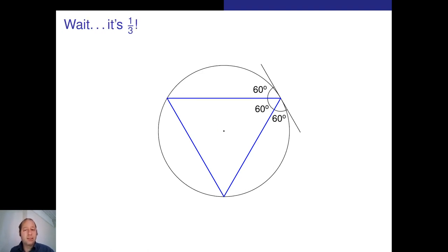Or is it? Maybe it's one third. Let's look at the tangent of the circle at one point of the circle, and then let's look at the random chord starting off from that point in a random direction.